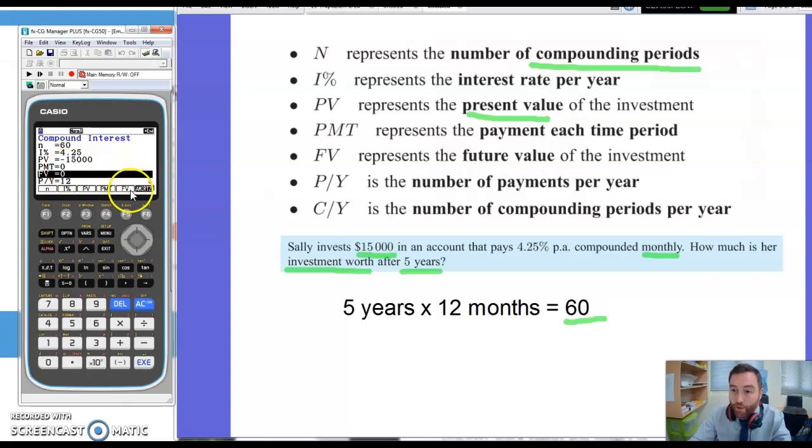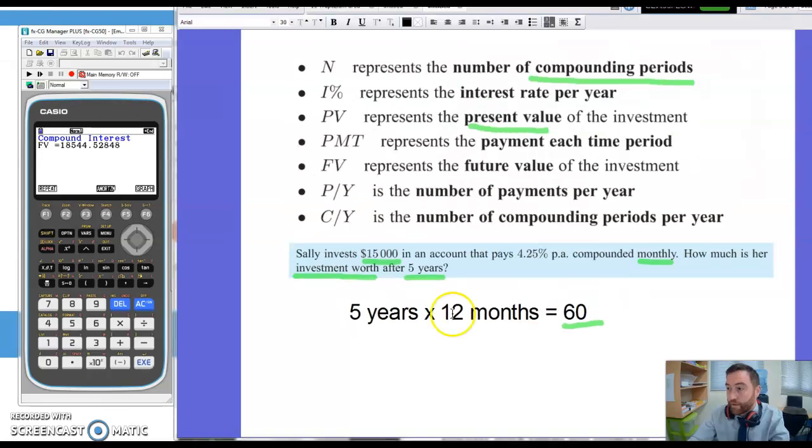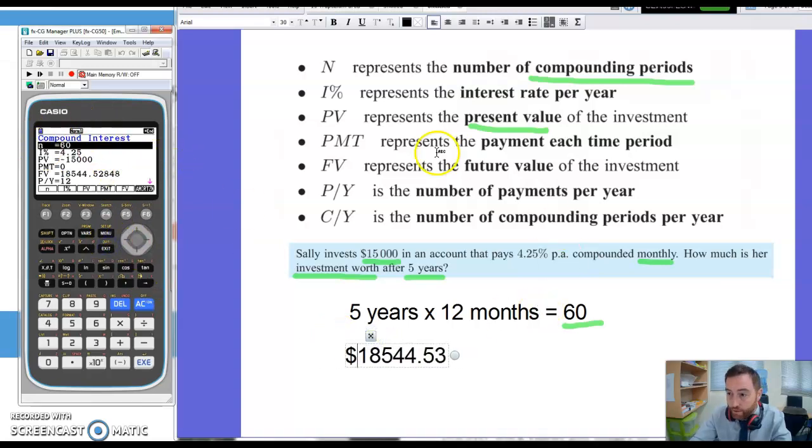We're going to calculate the future value. So I'm going to click on this one here, FV, and that is F5. So if I click that one it tells me FV equals $18,544.53. That is how much her investment is now worth. And so there's an example of how you can use this.